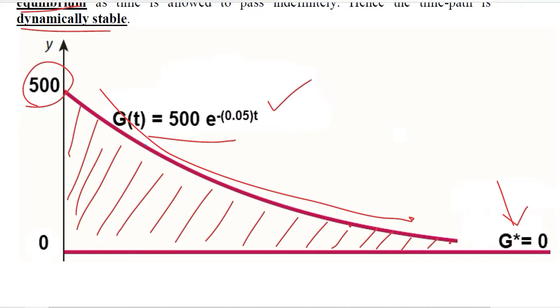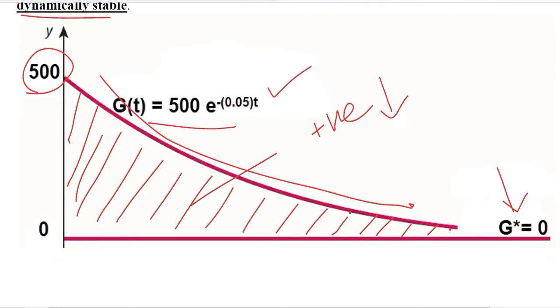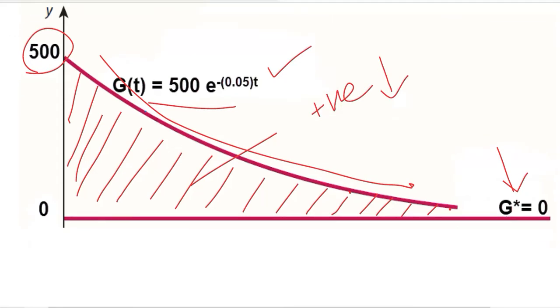The positive deviation is on the decline as we are going ahead of time. So the equilibrium is dynamically stable.